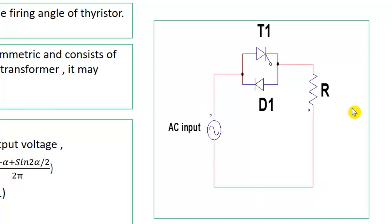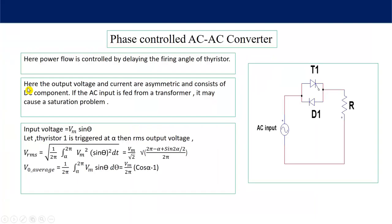There are some problems with this kind of circuit: symmetrical output voltage we are not able to get unless the firing angle is zero degrees. If the firing angle is zero degrees then there is no use of this thyristor — you can just connect a diode. Our purpose is to control the power from source to load. Here the load is resistive. The output voltage and current are asymmetric and consist of a DC component, meaning the average output voltage is not zero and some DC component is drawn from the source.